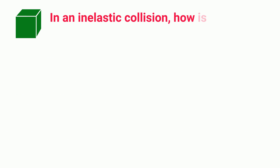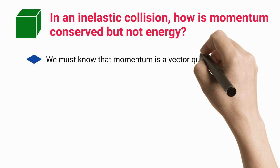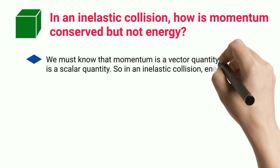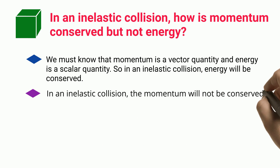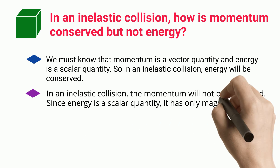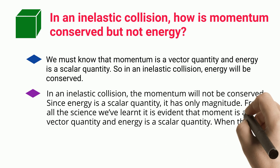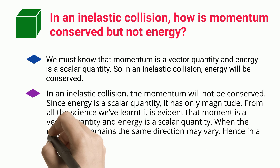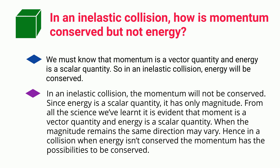In an inelastic collision, how is momentum conserved but not energy? We must know that momentum is a vector quantity and energy is a scalar quantity. Since energy is a scalar quantity, it has only magnitude. From all the science we have learnt, it is evident that momentum is a vector quantity and energy is a scalar quantity. When the magnitude remains the same the direction may vary. Hence, in a collision when energy is not conserved, the momentum has the possibility to be conserved.